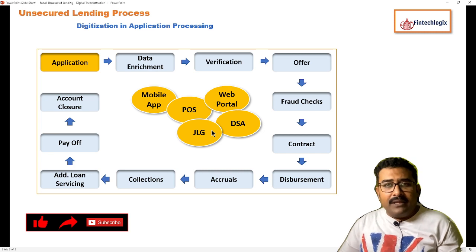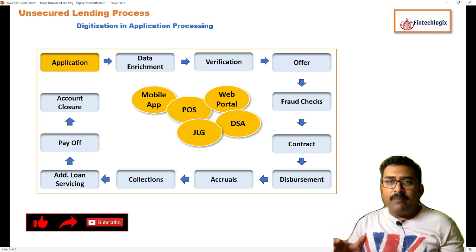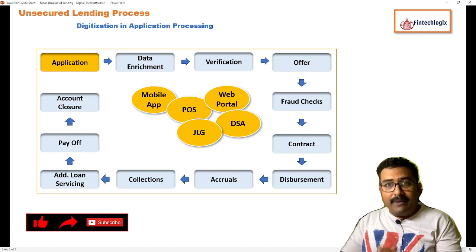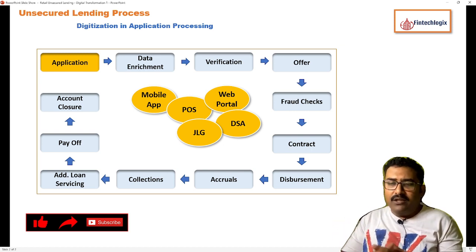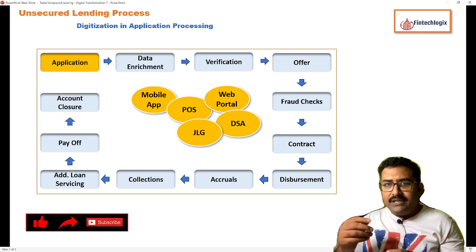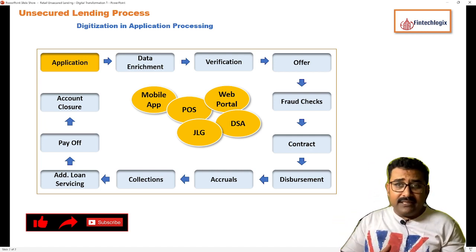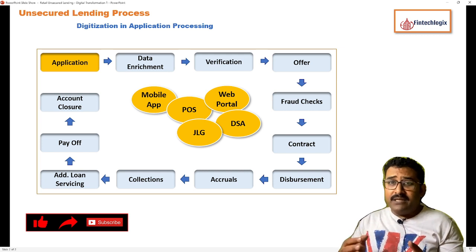There are also Joint Liability Groups, or JLGs. JLG is a joint liability group wherein these loans are very common for rural customers, where a group of borrowers are facilitated with a set of loans — typically from a block or small village. Previously, it was a very tedious process to get all the forms filled up, enter them into the system, link them to each other, and create the joint liability group. With digitization, application submission for JLGs has become much faster.